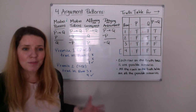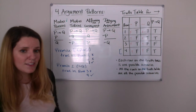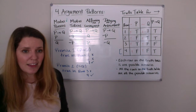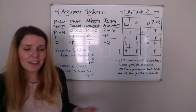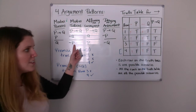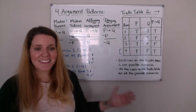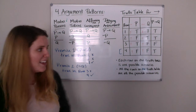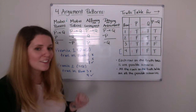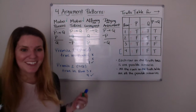We have row four where both premises are true. Now we see whether the conclusion is also true. Our conclusion is not P. We go to not P in row four, and not P is true. That means in all scenarios where both premises are true — there's only one — the conclusion is also true. So it's impossible for the premises to be true and the conclusion to be false. Modus tollens is a valid argument.